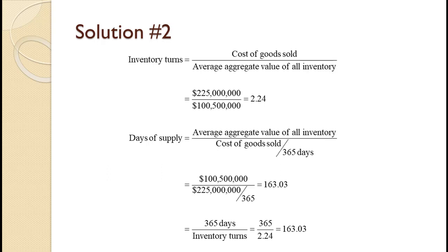Inventory turns is calculated as the cost of goods sold of $225 million divided by the average aggregate inventory value of $100,500,000. That equals 2.24. Days of supply is calculated as the average aggregate value of all inventory of $100,500,000, divided by the quantity of the cost of goods sold of $225 million divided by 365 days. That equals 163.03. It can also be calculated as 365 days divided by the turns of 2.24.